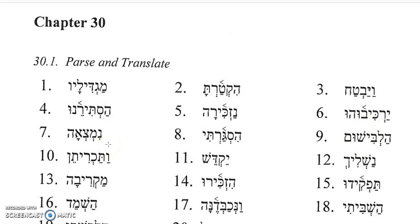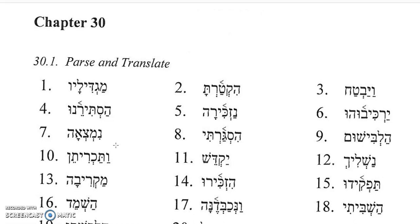Number seven, Nimsa-ah. It has a prefix Nun and a Kamats-He at the end, and it turns out this one is a little bit ambiguous. If you take the verb as a cohortative, it would be first common plural — Matsa is to find — so Nimsa-ah would mean let us find. But alternatively, the Nun could be the Nun of the Nifal, and the Kamats-He would be the Nifal perfect, third feminine singular, which would mean she was found, or she found herself.